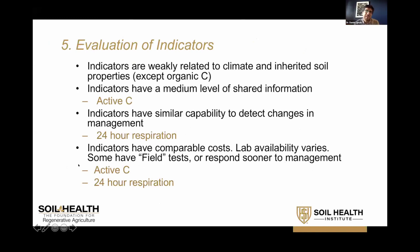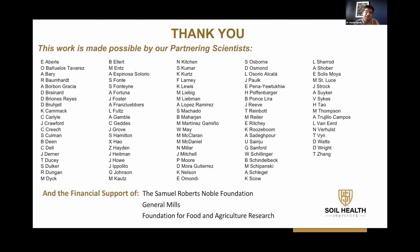To summarize: the indicators are weakly related to climate and inherited soil properties. The indicators have a medium level of shared information, but active carbon seems to be the best predictor. When looking at response to management, 24-hour respiration seems to be the most responsive. Finally, other considerations include cost, lab availability, and ability to do tests outside a lab — for both of those criteria, active carbon and 24-hour respiration seem to have the advantages. I want to thank our partnering scientists and our funders.